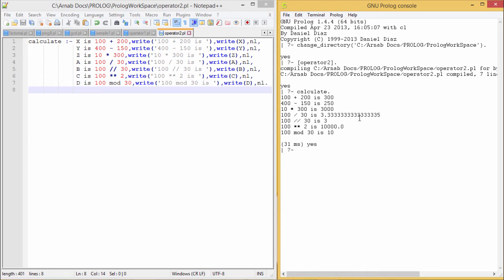I am getting the respective output as usual. 100 by 30 we are getting this result, that is the quotient. And here we are getting 100 slash slash 30, so we are getting the integer part of the quotient, that is the integer division. And here 100 mod 30 will be 10 as usual. 100 square will give you a value here 10,000. In this way we have written our code.